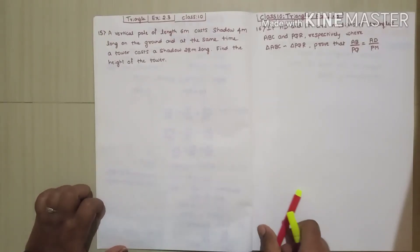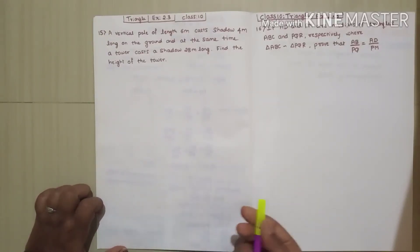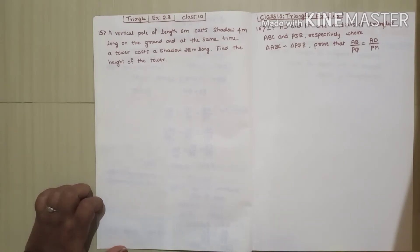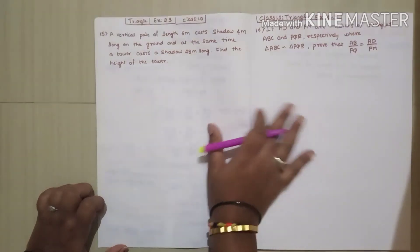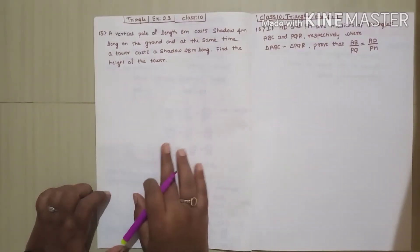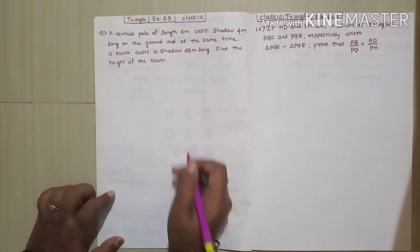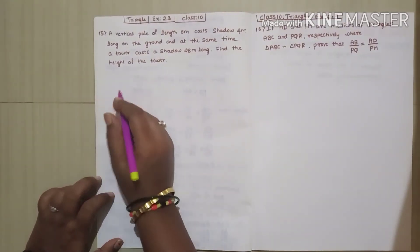Hello children, in this video we are going to study the Triangle chapter, Exercise 2.3 — the 15th and the 16th sums. These are the last sums in this exercise. First we'll see the 15th sum.